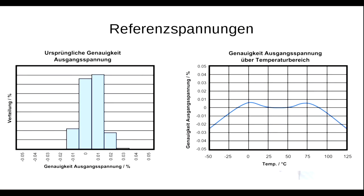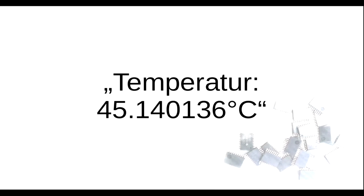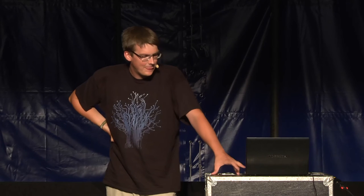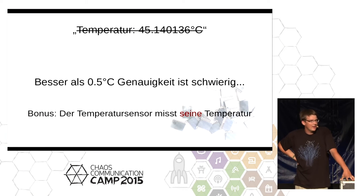The reference voltage's temperature dependency is not linear, by the way. If it were, you could factor it out — but it doesn't work that way. Let's move on to something different: temperatures stated with many decimal places. Measuring temperatures with more than 0.5°C precision is very, very hard. Stating a temperature with several decimal places is normally not realistic. A very important point: a temperature sensor will always measure its own temperature — not the temperature you want to measure. That can be a very different thing.